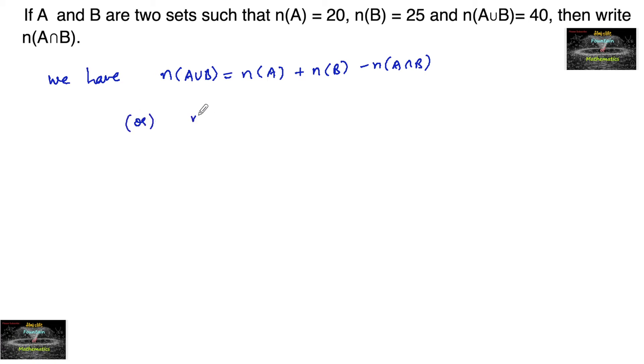Or this can also be written: n(A∩B) = n(A) + n(B) - n(A∪B).